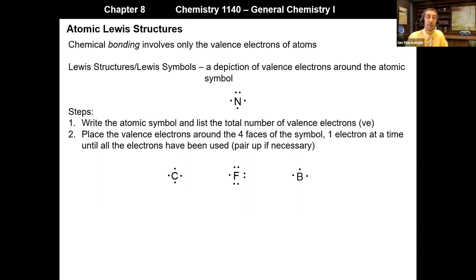Here are a few examples of Lewis symbols. Carbon has four valence electrons, so we simply place a dot on each of the four faces. Fluorine has seven, so starting at the top and working clockwise, we place one dot on each face — that's four — and then pair up three of the remaining: top, side, and bottom. That leaves us only one unpaired electron.